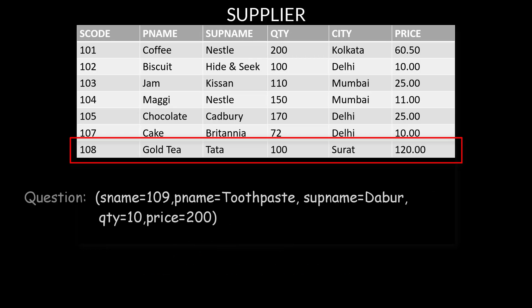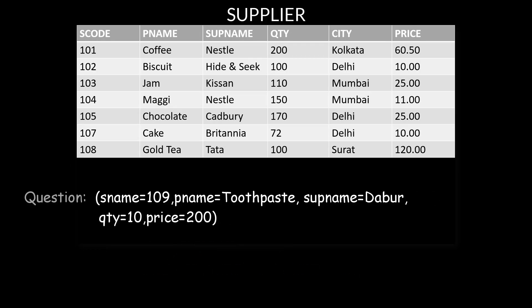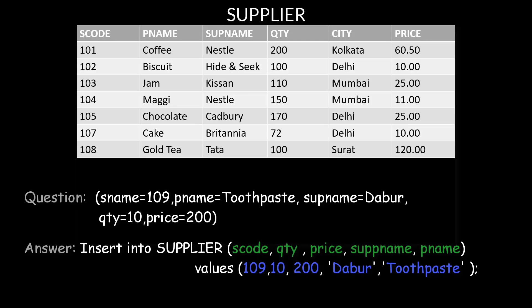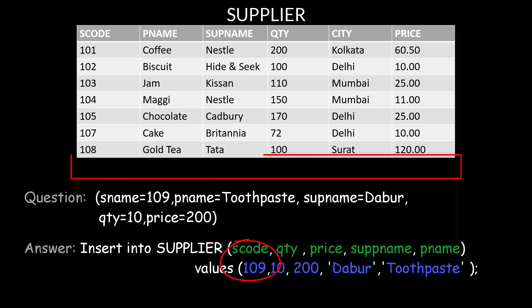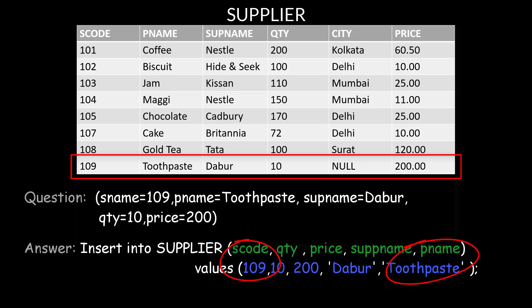Another example: suppose you want to add values where the city value is missing. The answer is: INSERT INTO supplier (column names) VALUES (...), where 109 is associated with s_code and the product name value is associated with the p_name column.